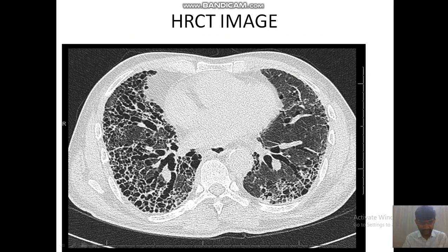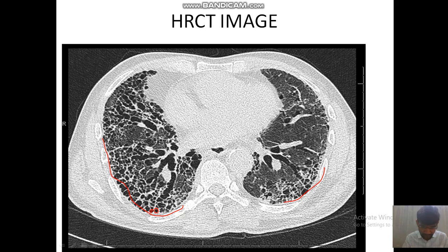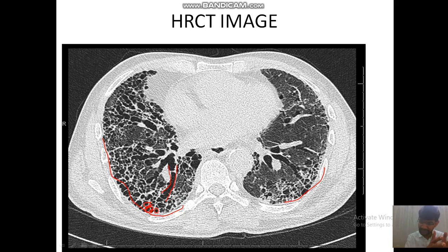Coming to the HRCT image — you can see it is a UIP pattern. This is subpleural; you can see all the disease is subpleural in nature and basal predominant, as it is a lower row axial image. You can see these are all honeycombing — cluster cystic spaces which share the wall, of size 3 to 10 mm. The cysts share the wall with each other. Traction bronchiectasis or bronchiolectasis is the non-tapering of bronchi towards the periphery. Usually the bronchi taper towards the periphery; in bronchiectasis, the airway does not taper. Both traction bronchiectasis and honeycombing are not separate entities — they are in continuum.